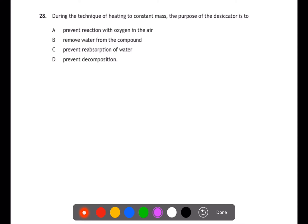Question 28. During the technique of heating to constant mass, the purpose of the desiccator is to do what? The purpose of a desiccator is to prevent water absorbing into your solid when it's hot. It is not to remove water from the compound and this is a very common mistake.